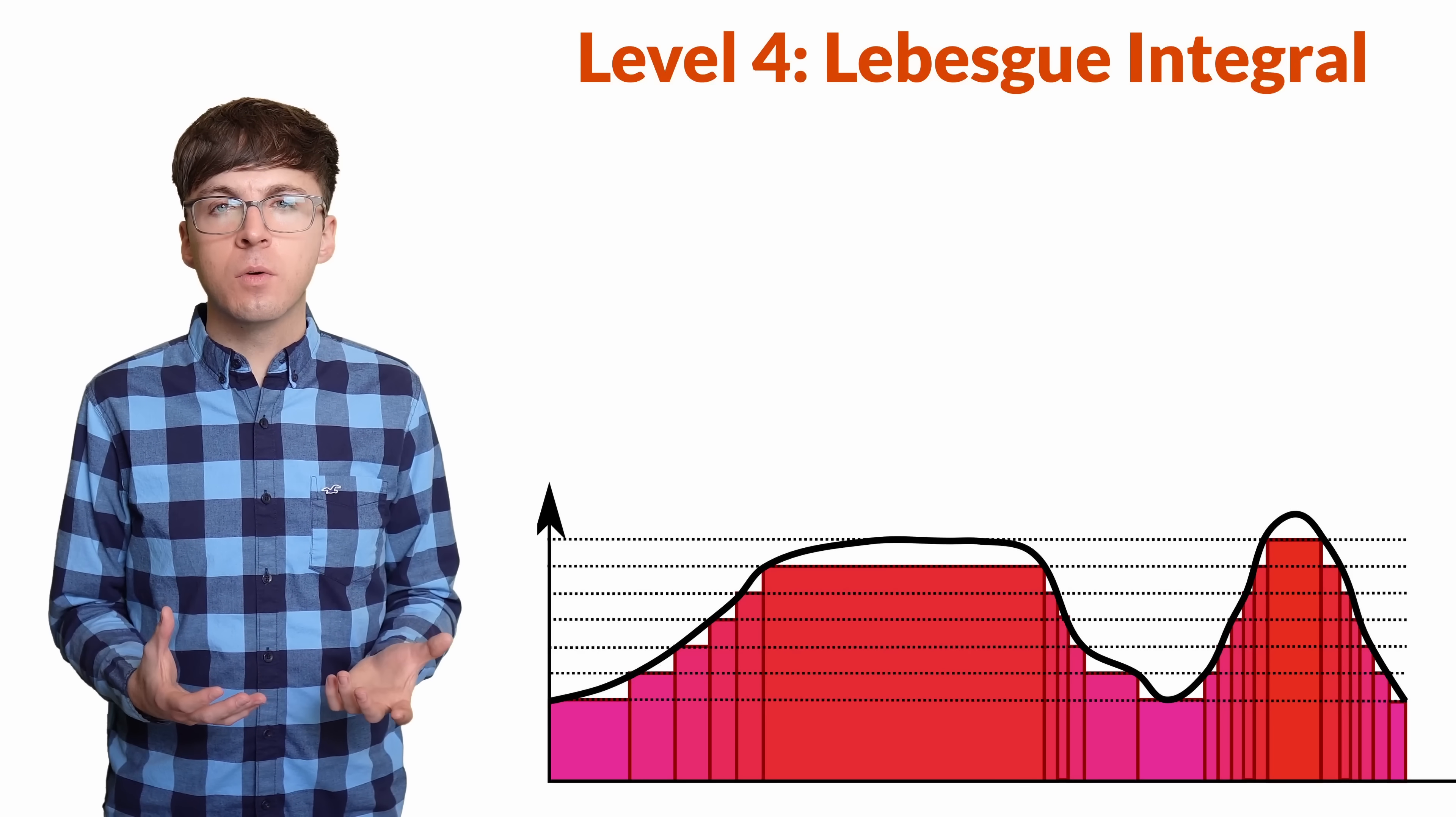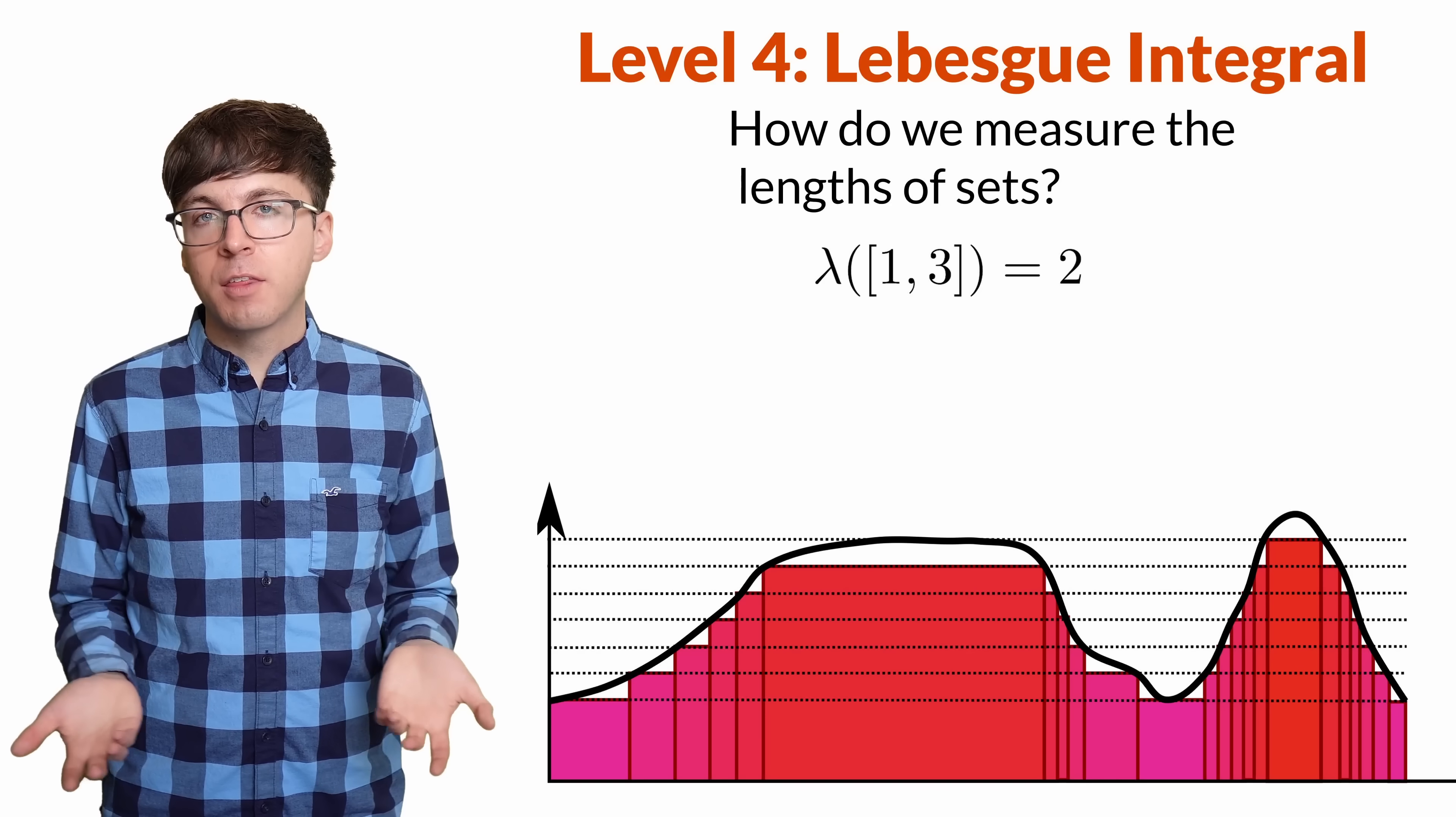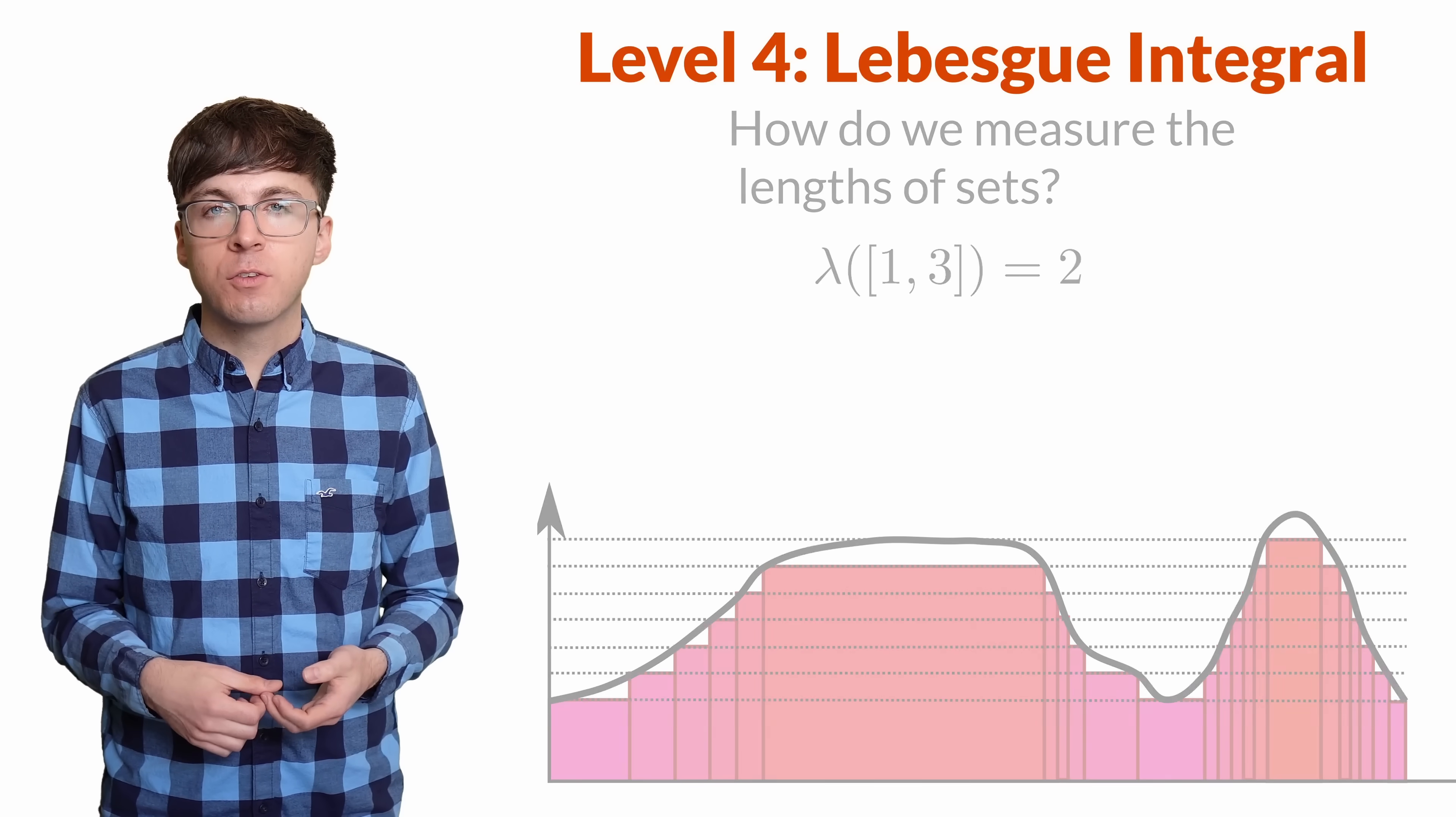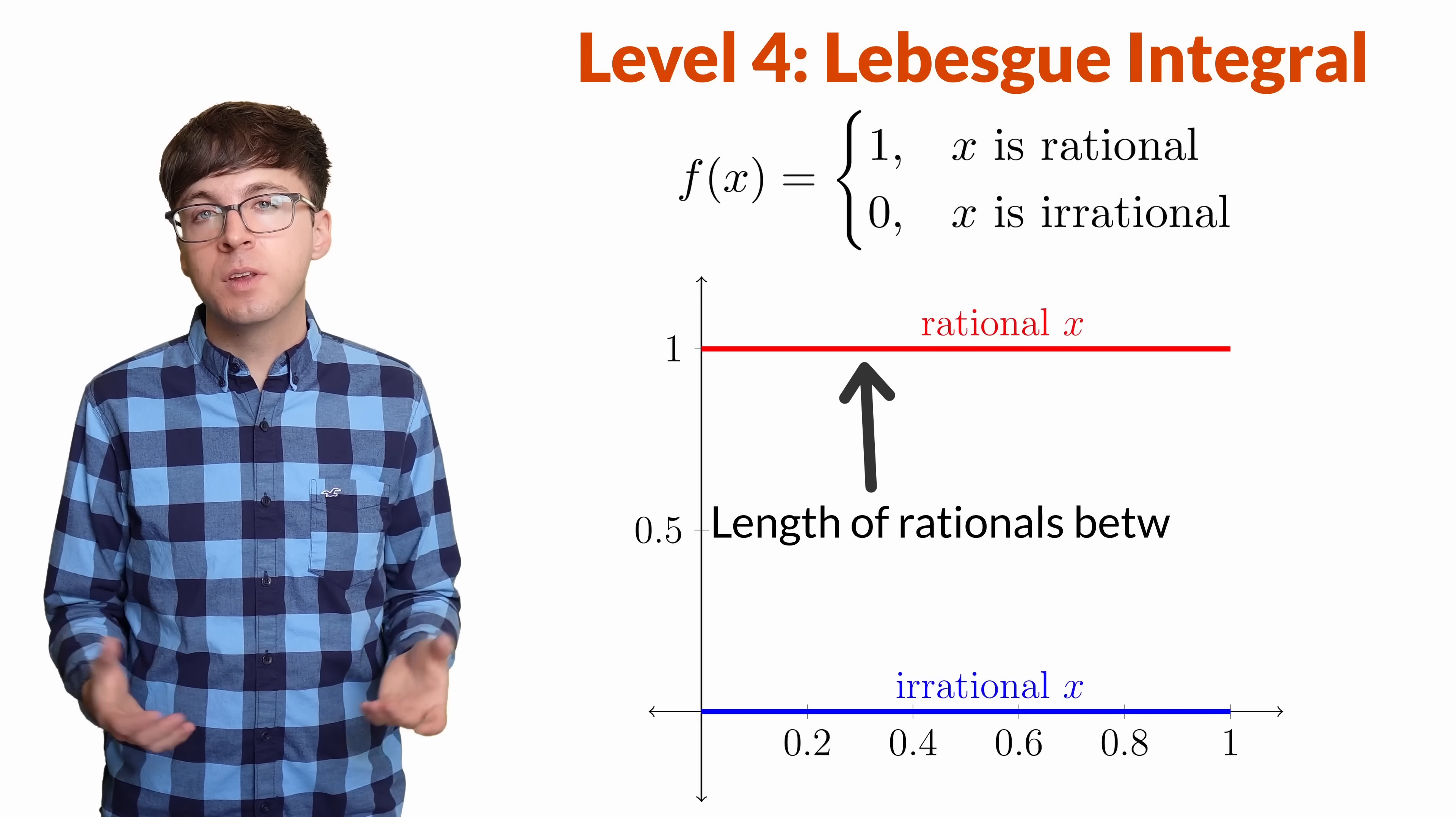There are some technical details though. The biggest one is, how do we measure these sets along the x-axis? Some of them seem straightforward enough, like if you have the interval 1 to 3, that would have length 2. But the part of the x-axis that corresponds to a piece of the range might not be so nice. Let's return to our original question. If we integrate the function that's 1 for all the rational numbers and 0 for all the irrational numbers, now we need to know the length of the rational numbers between 0 and 1.